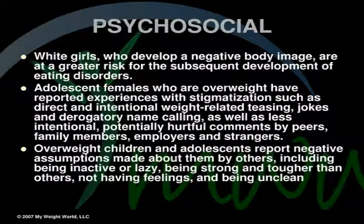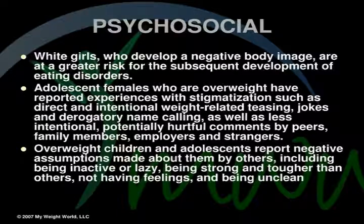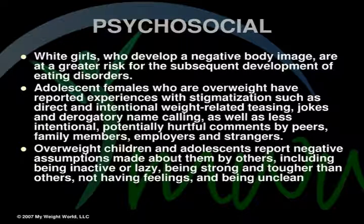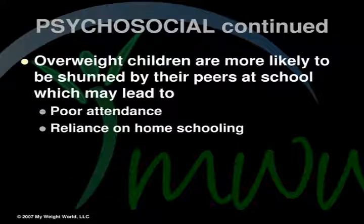Psychosocial effects: White girls who develop a negative body image are at greater risk for subsequent eating disorders. Overweight adolescent females report experiences with stigmatization such as direct weight-related teasing, jokes, and derogatory name calling, as well as less intentional, potentially hurtful comments by peers, family members, employers, and strangers. Overweight children and adolescents also report negative assumptions made about them — including being inactive or lazy, being strong and tough, not having feelings, and being unclean. Overweight children are more likely to be shunned by peers at school, which may lead to poor attendance and reliance on homeschooling.